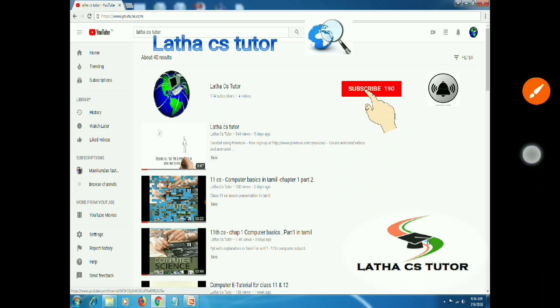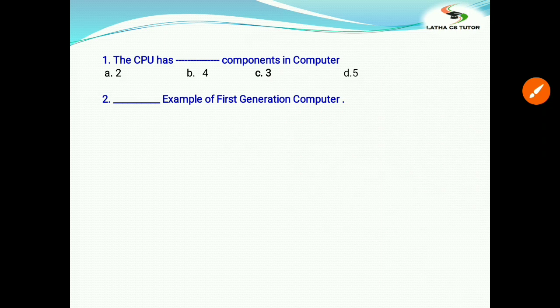Okay, let's see the lessons one by one. First question: The CPU has how many components in computers? Options are a) 2, b) 4, c) 3, and d) 5. The correct answer is 3. As you know, CPU has three parts: ALU, control unit, and memory unit. Second question: Example of first generation computer?